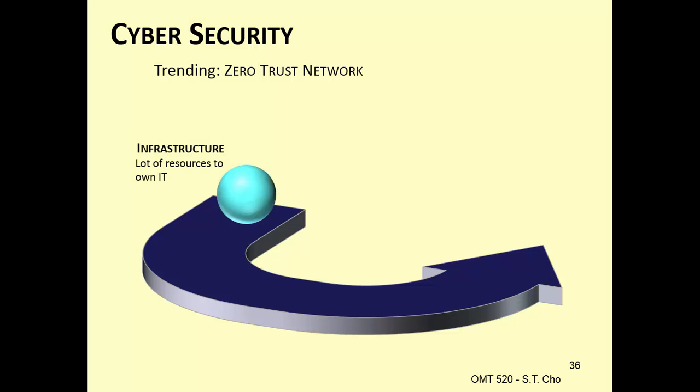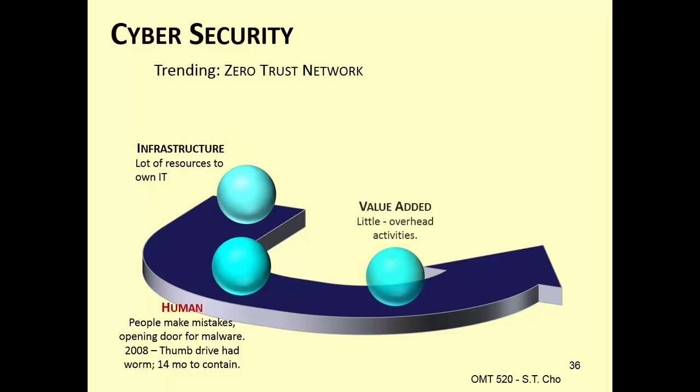Zero trust networks are trending. It takes a lot of infrastructure to own IT, and people make mistakes. What took down the government was actually a thumb drive. Somebody just picked up a thumb drive, put it into a computer, and the government got hit by a worm. It took 14 months to contain that virus. This is why ASU's policy is if you find a USB stick, throw it away. Don't touch it because it could be contaminated.